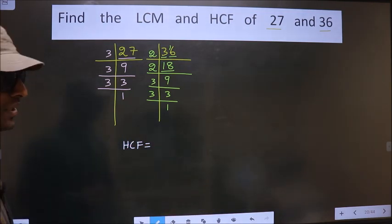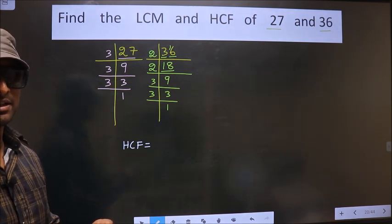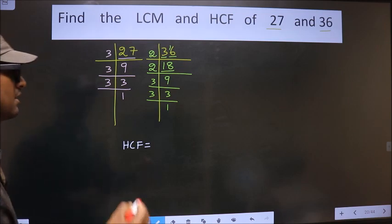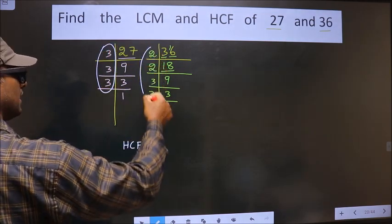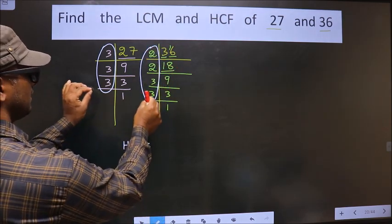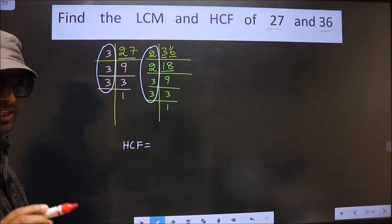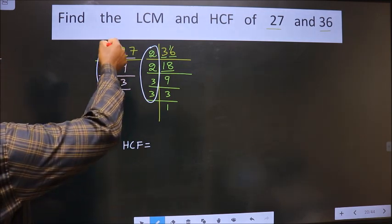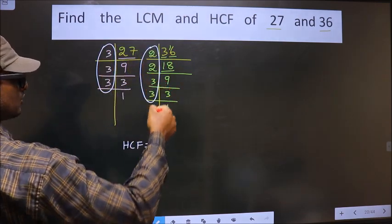So now our HCF is the product of numbers that are present here and also here. So now we should find the numbers that are present in these two places. I repeat, we should find the numbers that are present here and also here.